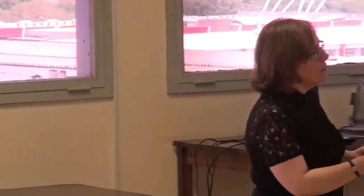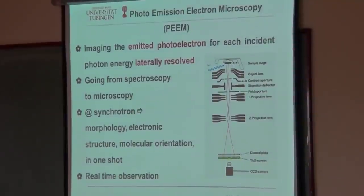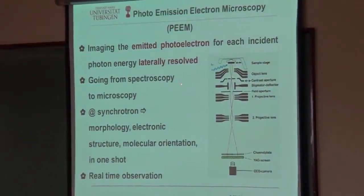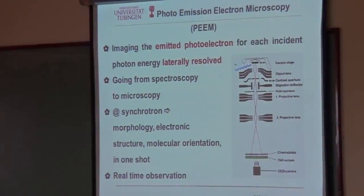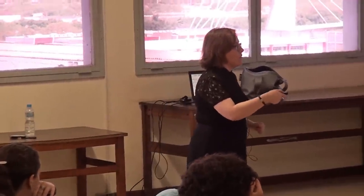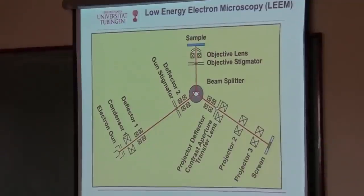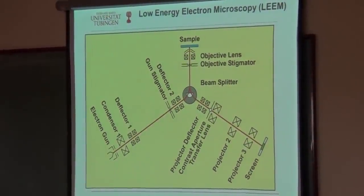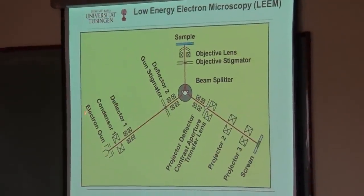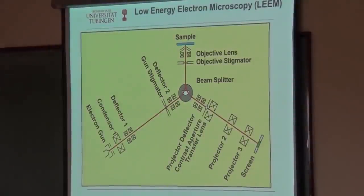If instead you shoot electrons onto your sample — low-energy electrons — you again collect electrons from the surface and get lateral information. This means you add a second column with an electron gun to your microscope, and you can perform low-energy electron microscopy, LEEM, with the very same instrument.